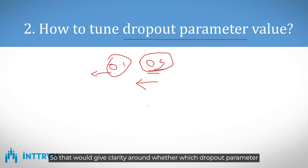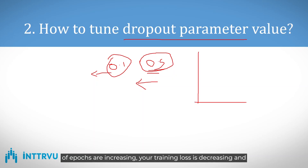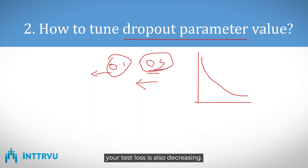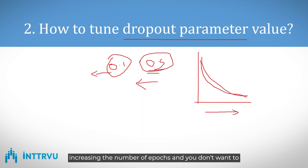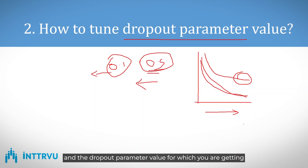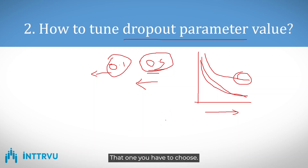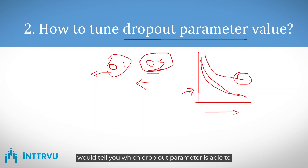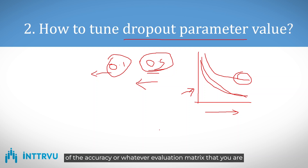Ideally, you want a result where as the number of epochs increases, both your training loss and test loss are decreasing. You don't want a result where training loss is low but test loss is very high — that is an overfitting example. Try different dropout values and choose the one giving good results. Look at the training and test loss curves to identify which dropout parameter avoids overfitting while giving acceptable accuracy.